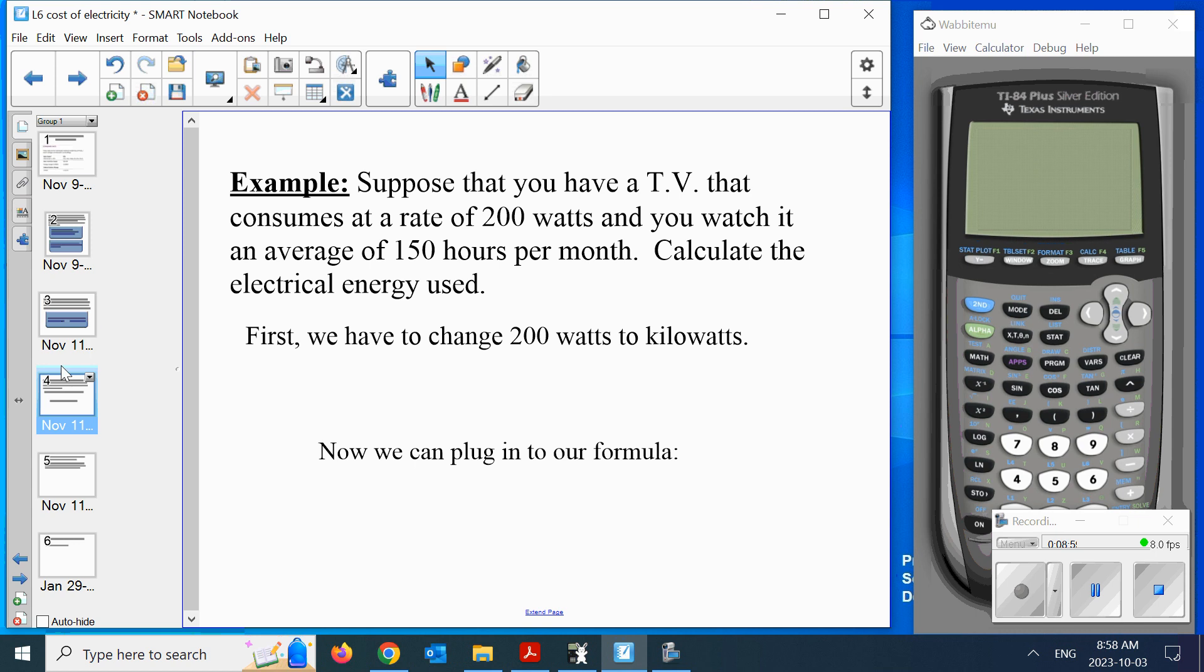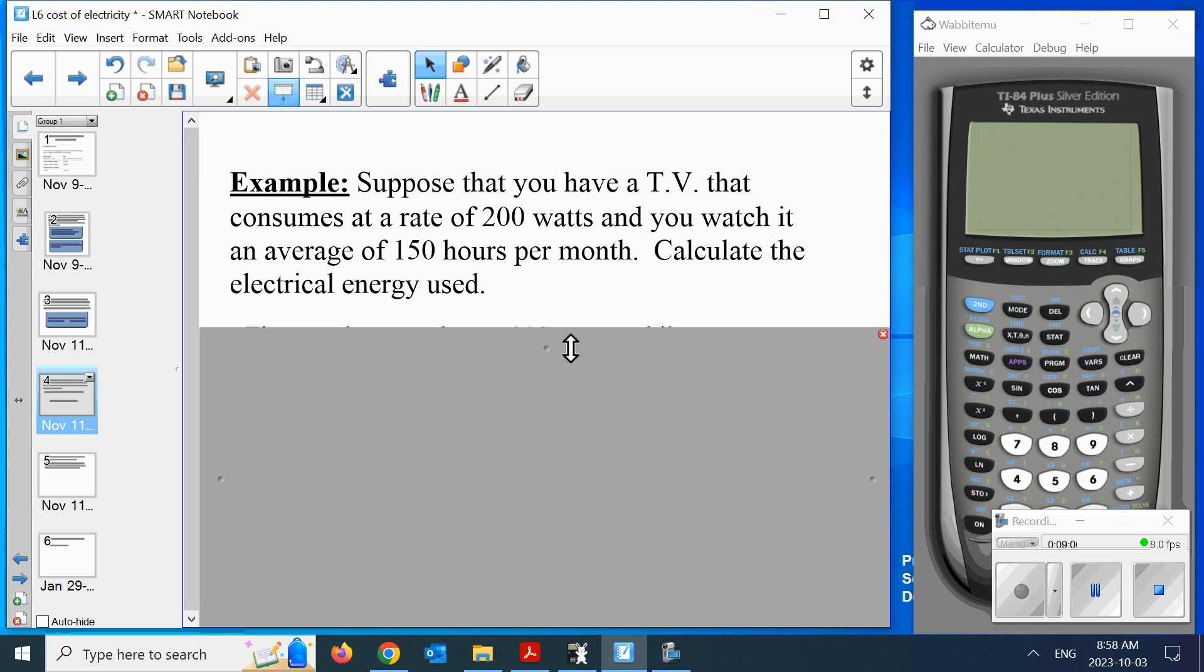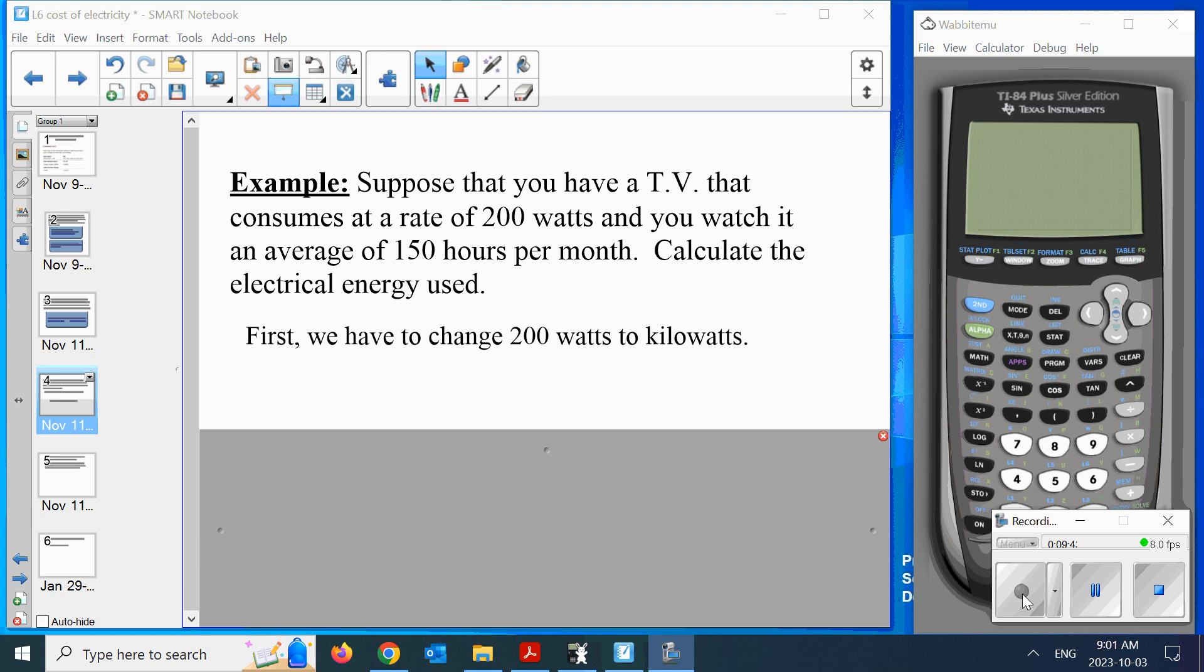Let's just get this going on. This I do want you to jot out. Suppose you have a TV that consumes at a rate of 200 watts. Watch it an average of 150 hours per month. Calculate the energy used. It's important to get this down on paper before we try it. We were told that it consumes at a rate of 200 watts, about 200 kilowatts.